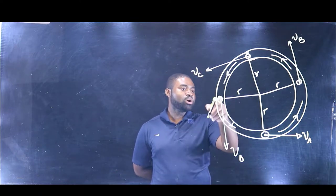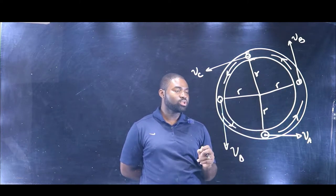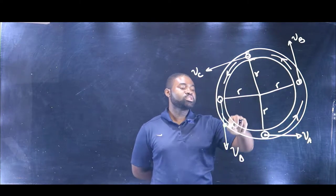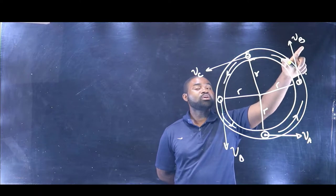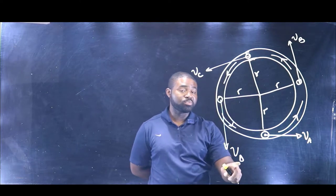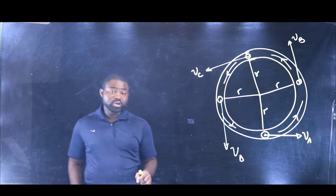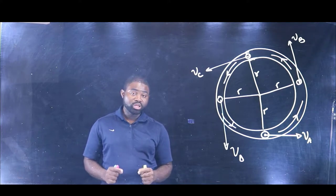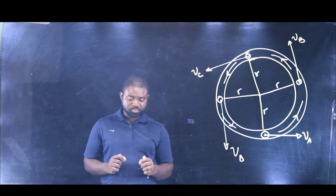Even though the object is at different locations, the only condition for the object to maintain this circular track is for the speed at A to equal the speed at B, to equal the speed at C, and to equal the speed at D. An object is considered to be in uniform circular motion when it moves around a circular track at a constant speed.